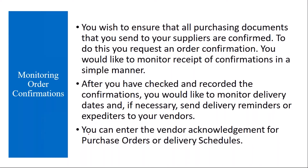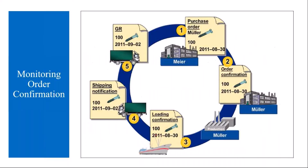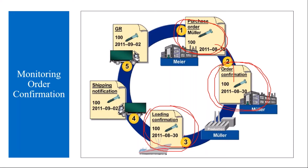In SAP, you can enter the vendor acknowledgement for purchase orders or delivery schedules — you have this option in the purchase orders. You create a purchase order, give it to the supplier, the supplier receives the PO and gives a confirmation. You can also get loading confirmation — meaning the vendor has loaded the material into a truck — and shipping notification once he dispatches it. Then you receive the material and do the GR in the system.